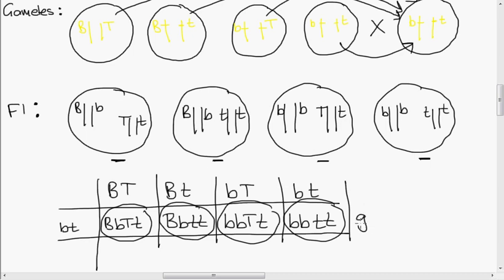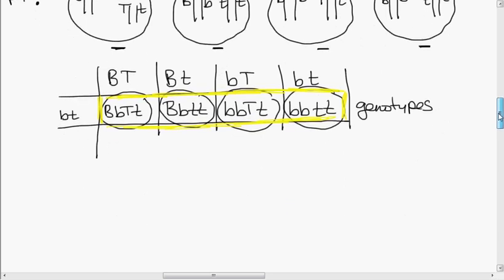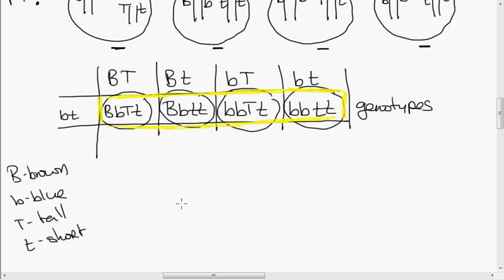Those answers in the boxes are our genotypes. We also need to do the phenotypes — what do we physically see when we look at each individual? Big B, small b: brown is dominant, so this is brown-eyed and tall. Big B, small b, small t, small t: brown-eyed and short, because there's no big T. Then we have blue and tall, and finally blue and short.